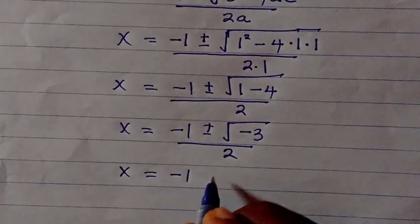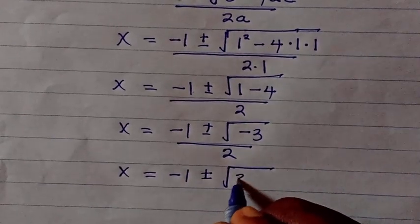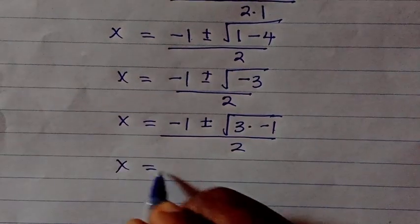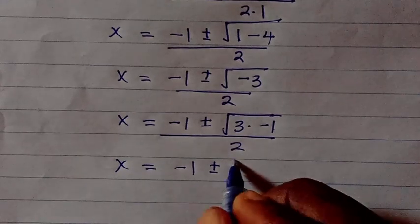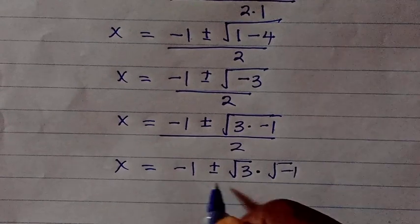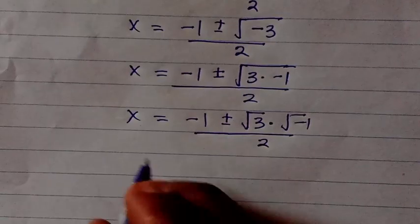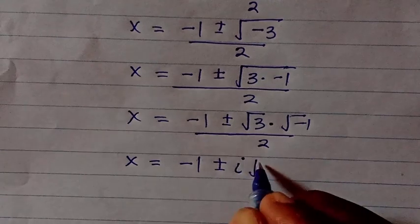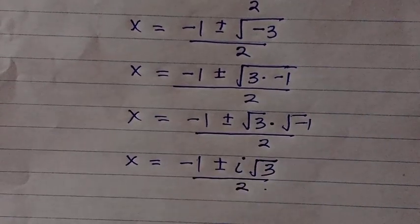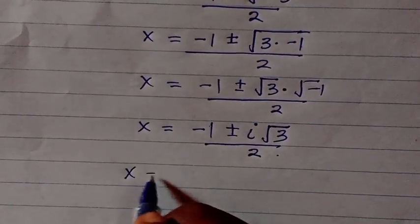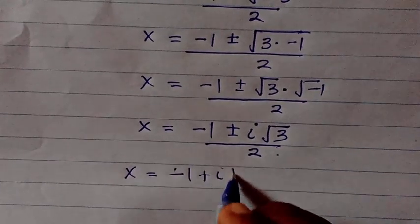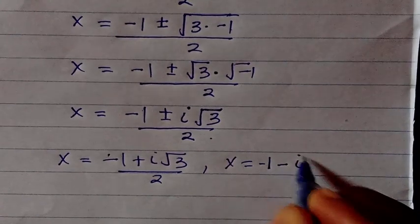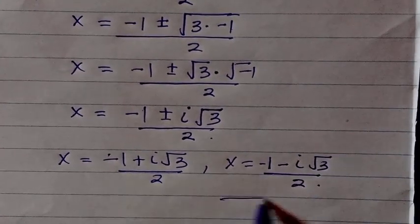We can separate this as the square root of 3 multiplied by negative 1, divided by 2. Then separating the roots, we have root 3 times root of negative 1, divided by 2. Since the square root of negative 1 is i, we have x equals negative 1 plus or minus i root 3, divided by 2. So the two solutions are x equals (negative 1 plus i root 3) divided by 2, or x equals (negative 1 minus i root 3) divided by 2. These are the complex roots which satisfy this equation in the complex space.